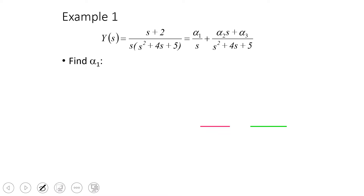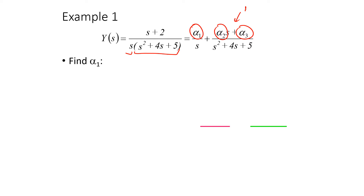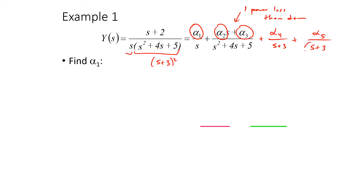Now for a partial fractions example: we split the expression into pieces with unknown coefficients α₁, α₂, and α₃. The numerator polynomial must be one power less than the denominator. For a repeated root such as (s+3)², we need two entries: α₄/(s+3) plus α₅/(s+3)². Higher-order polynomials require enough coefficients to be one order less than the denominator.